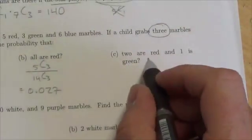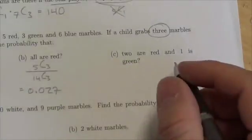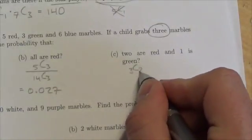Now over here, two are red and one is green. That's kind of similar to part a there. Two are red, we already know how to do that, that's three choose two.